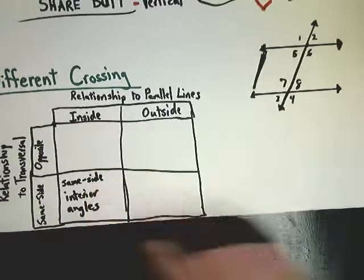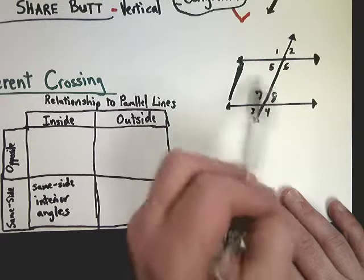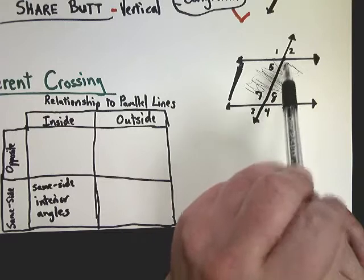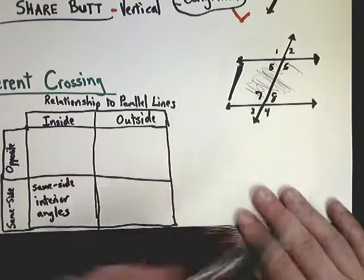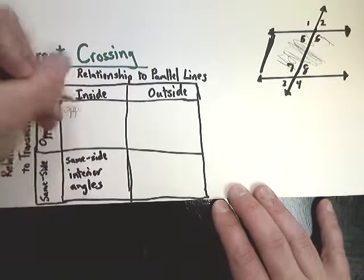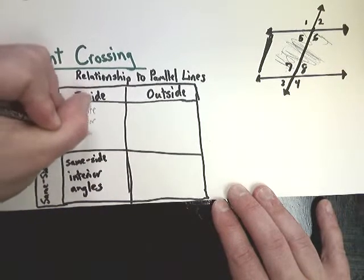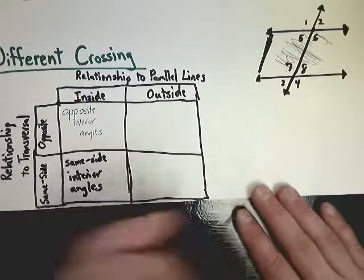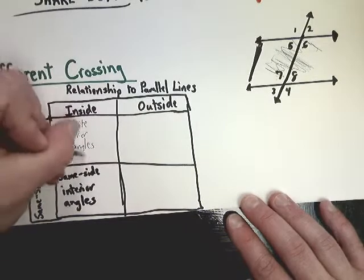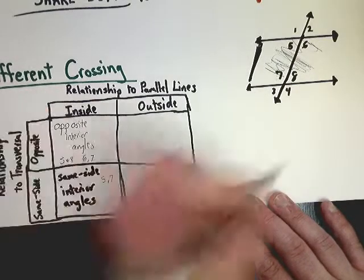If the angles are both inside the parallel lines but on opposite sides of the transversal, we call them opposite interior angles — also known as alternate interior angles. The opposite interior angle pairs are 5 and 8, and 6 and 7. The same-side interior angle pairs are 5 and 7, and 6 and 8.